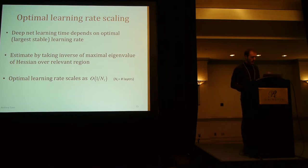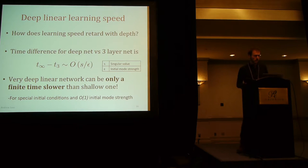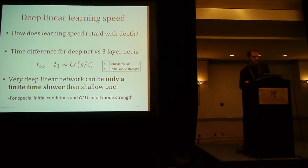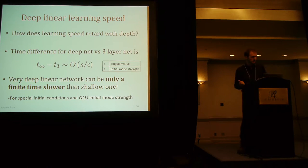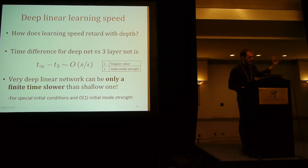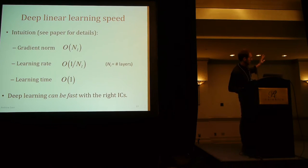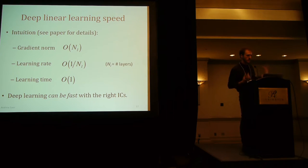We're now in a position to answer a key question in deep learning theory: how much slower is a really deep network than a shallow network? Is it infinitely slower? You might think so because the learning rate scales as 1 over N. But in fact, the time difference for a deep network versus a three-layer network remains finite. So a deep linear network can be only a finite time slower, at least with these special initial conditions. The intuition is simple: the gradient norm is of order N, the learning rate is 1 over N, so they multiply to give approximately constant learning time.